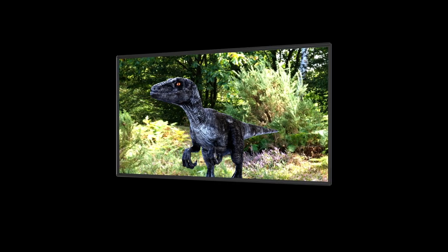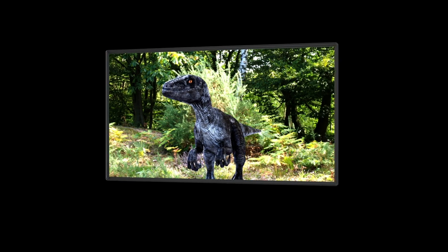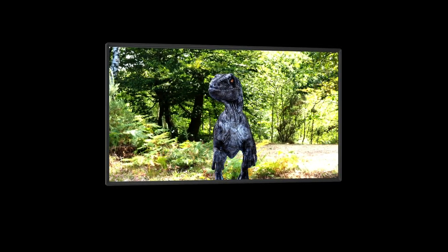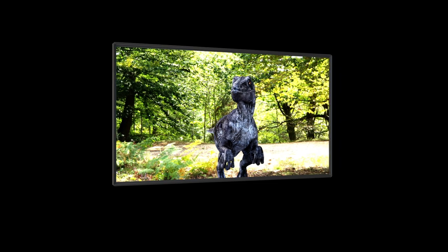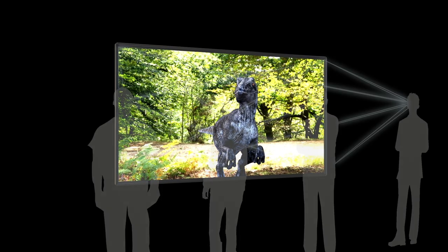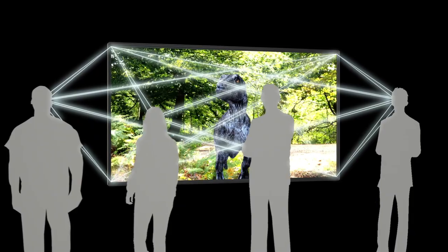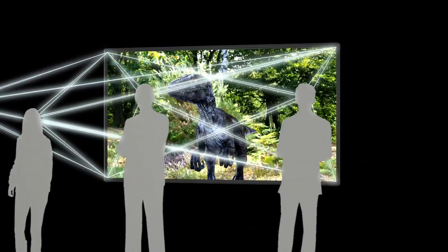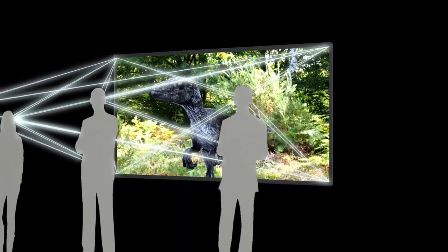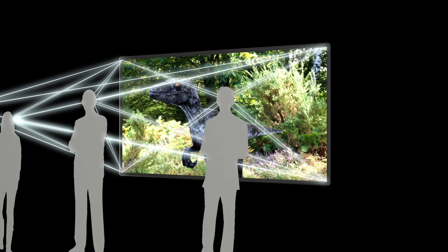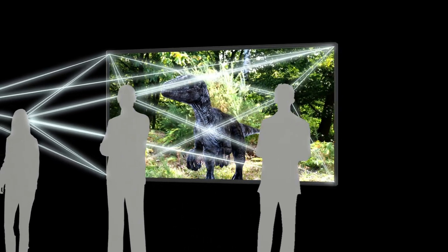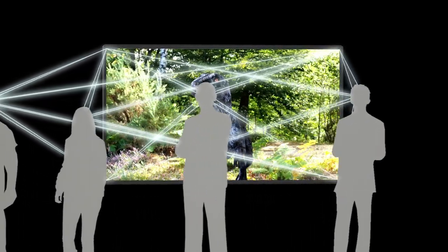In a holographic display, however, the image should appear three-dimensional in space and also change its perspective relative to the position from where it is viewed. To experience a three-dimensional image, a person has to see two different images, one for each eye. And as the person changes position, the images seen also need to change.